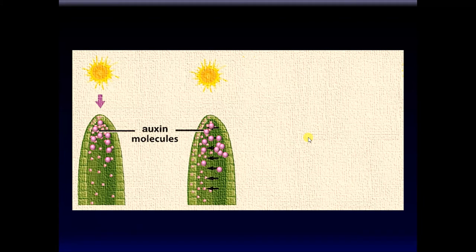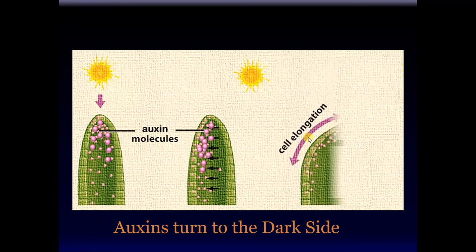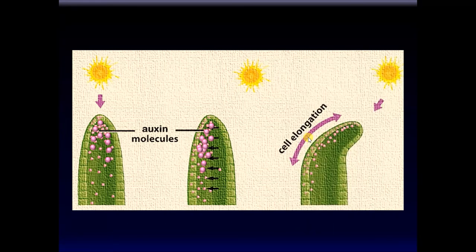This is how phototropism works. Auxins are produced in the apical buds and distributed equally among the cells. However, if the light is distributed unequally — where one side of the plant gets more light than the other — the auxins will also be distributed unequally. This occurs because light destroys some auxins and promotes migration of auxins to the dark side, where they promote cell elongation. The affected cells don't divide — they simply stretch longer. As the cells on one side are longer compared to the other side, the plant seemingly bends towards the light.